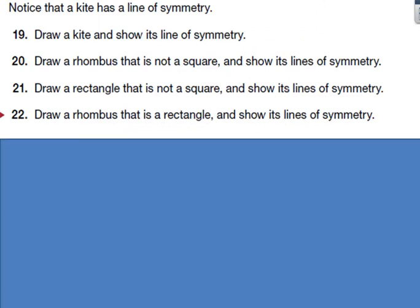Notice that a kite has a line of symmetry. Draw a kite and show its line of symmetry. Draw a rhombus that is not a square and show its line of symmetry. Can you draw a rectangle that is not a square and show its line of symmetry? Can you draw a rhombus that is also a rectangle and show its line of symmetry? Try these four and then continue the video to see the answers.